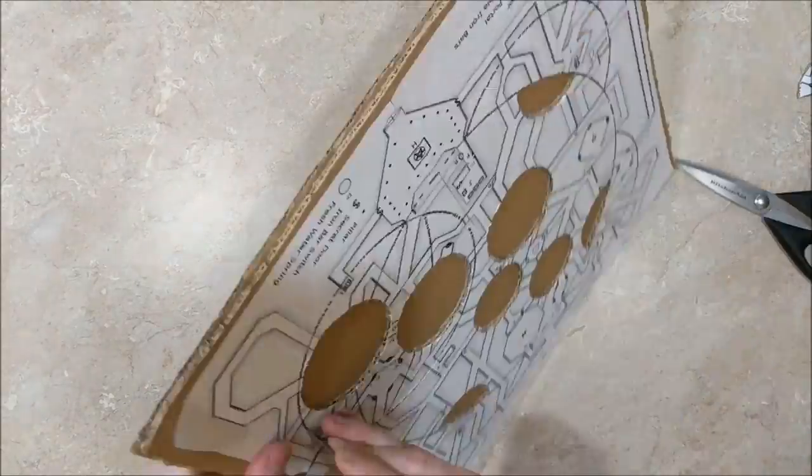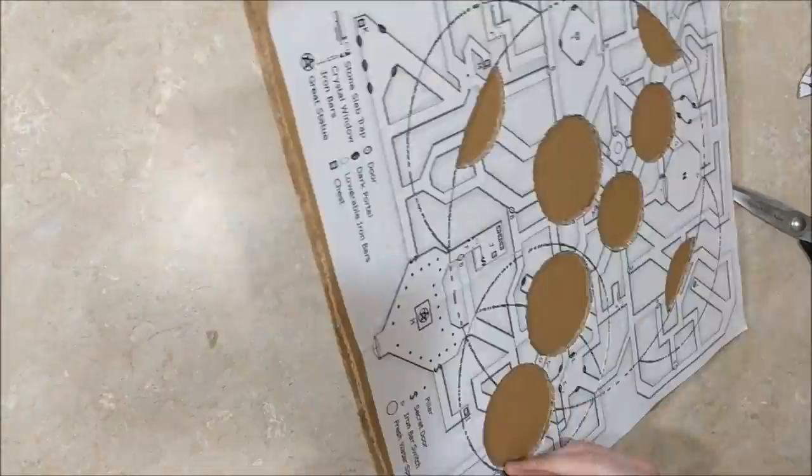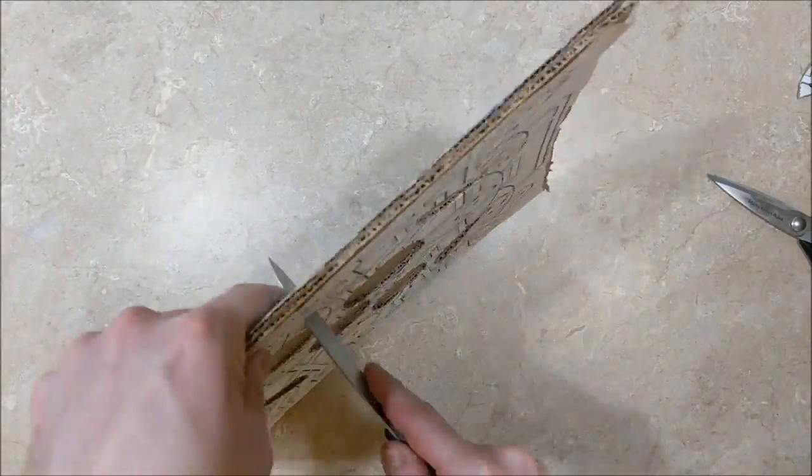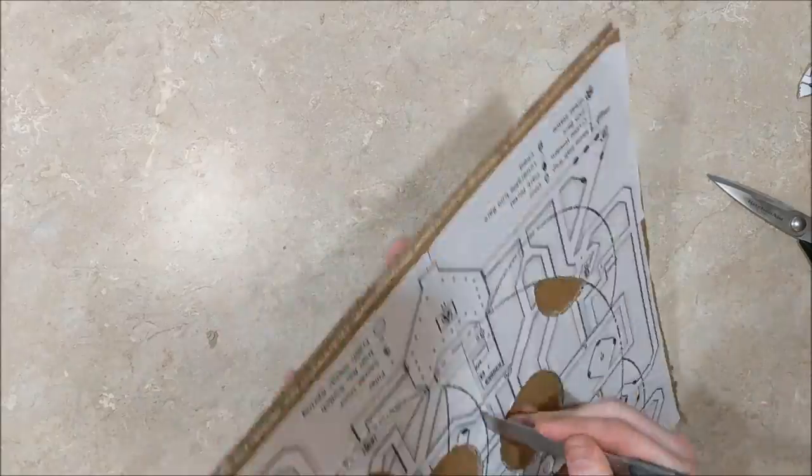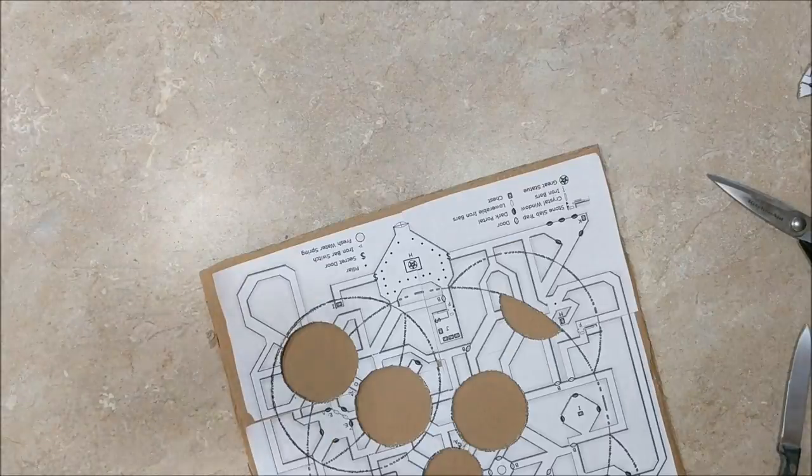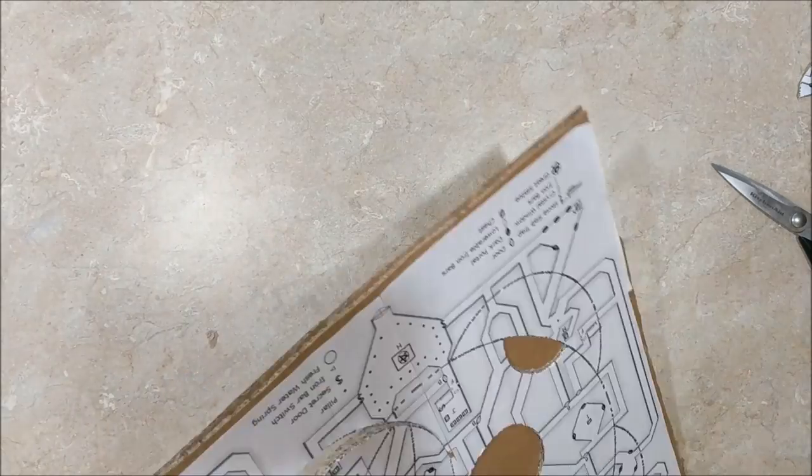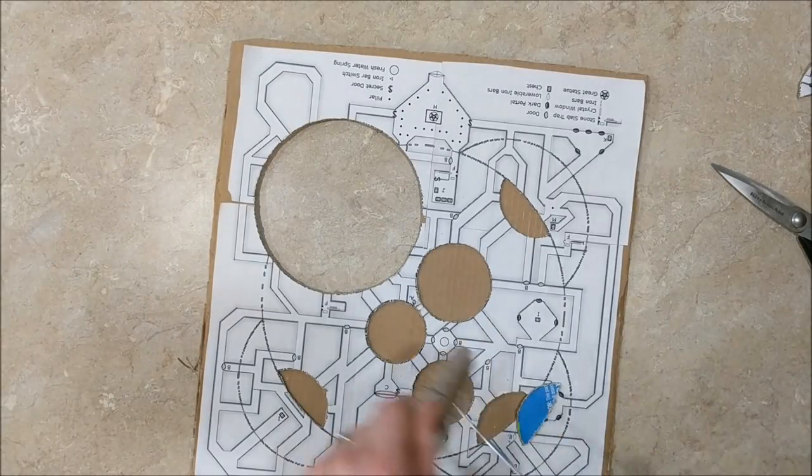I would start with the second largest circle. It's just easier to cut that one out wholesale than to cut it out of the larger circle. And then I would do the larger circle after that.